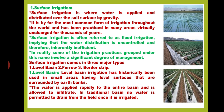In reality, some of the irrigation practices grouped under this name involve a significant degree of management. Surface irrigation comes in three major types: number one, level basin; second one is furrow; and the last one is border strip.